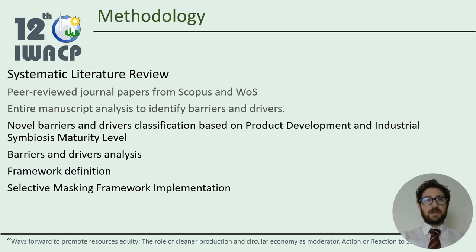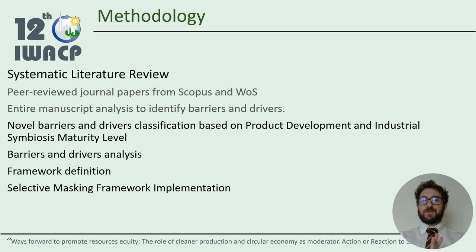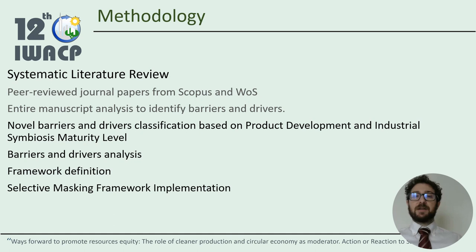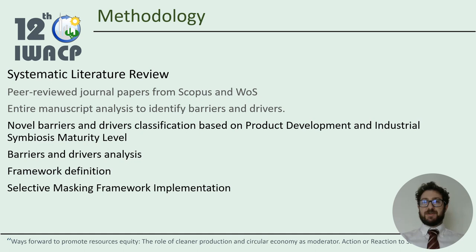We identified more than 800 peer-reviewed journal papers from Scopus and Web of Science. All of these papers have been analysed to identify barriers and drivers. They are classified by a novel approach that considers three main points: new product development, industrial symbiosis maturity level, and the institutional capacity of the network. Subsequently, all the barriers and drivers have been divided in our classification and used to define a framework to support scholars, practitioners, students and all readers interested in industrial symbiosis, leading them through the main barriers and drivers nature and the main success and failure reasons.